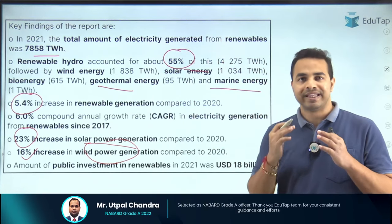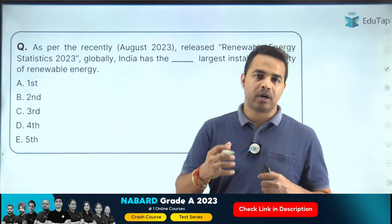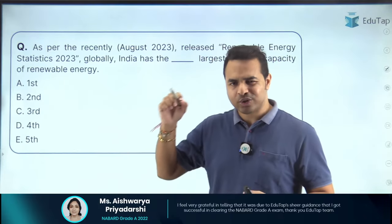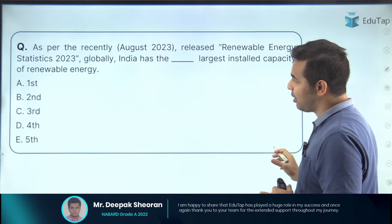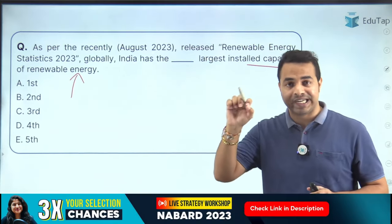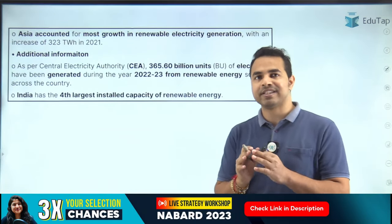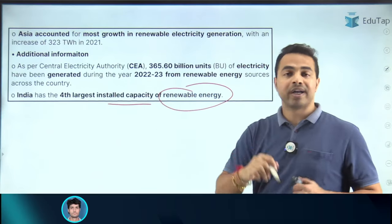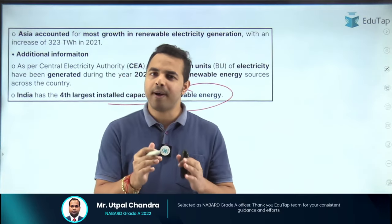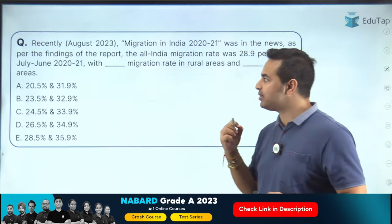Moving to the next question: as India also has renewable energy targets, this report quotes data that India has the fourth largest installed capacity of renewable energy. India is at the fourth position globally for installed renewable energy capacity. You can easily cite this data even in descriptive or essay-type questions to fetch more marks.